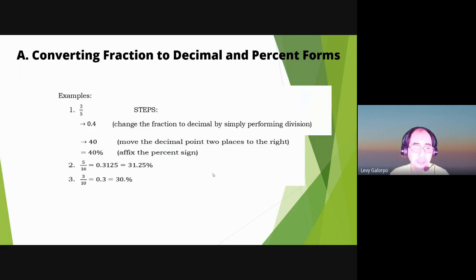The example is two-fifths. This is a fraction and then we will convert it to first decimal and then to percent. So here are the steps: change the fraction to decimal by simply performing division. Therefore, ang gagawin natin class ay two divided by five, so ganun lang, and we will arrive with the answer 0.4. Now the second step: move the decimal point two places to the right. So yung 0.4, syempre i-move natin ng dalawang beses papunta sa kanan, so magiging 40 sya kasi kailangan mo magdagdag ng zero para maimove mo si decimal point ng dalawang beses, and then you have that 40. Now let's affix the percent sign which is now 40 percent.